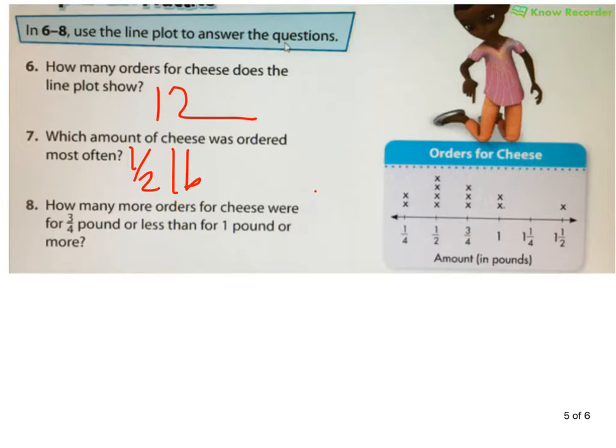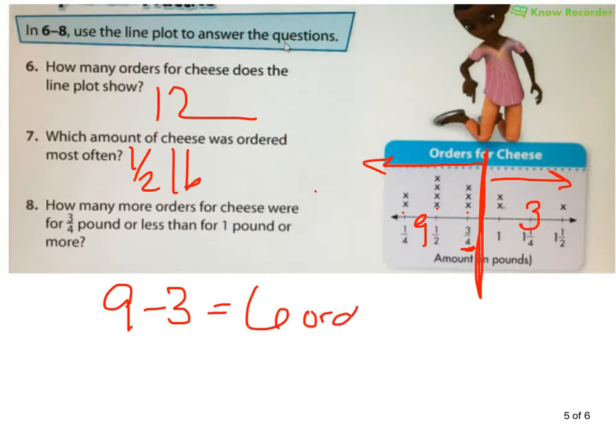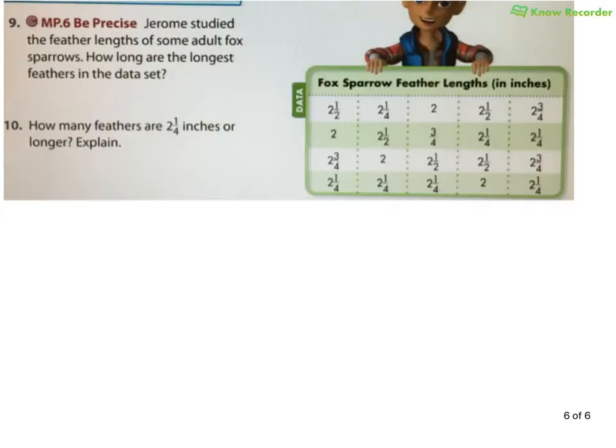All right. So, then we have how many more orders of cheese were for three quarter pounds or less than for one pound or more? So, I got to find three quarters or less. Here's three quarters. I have to use it because it says three quarters or less. Or one pound and more. Here, my value is three. Here, my value is four, six, nine. Nine orders minus three orders. Six orders.